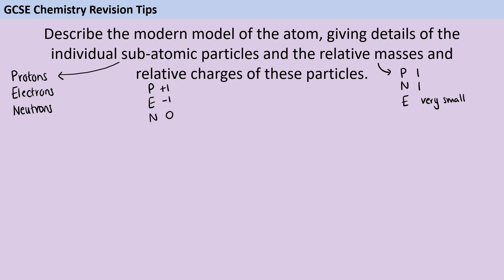And then for the relative charges we want plus 1 for a proton, minus 1 for an electron and 0 for a neutron. Hopefully you're aware that whenever they say relative charge you have to be giving that as a numerical value. It's not enough to just say positive and negative and neutral.